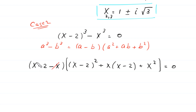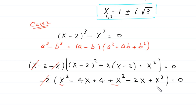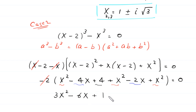Now x minus 2 minus x gives negative 2. We expand x minus 2 whole squared, which becomes x squared minus 4x plus 4, plus x squared. x times negative 2 gives negative 2x, plus x squared, is equal to 0. Dividing both sides by negative 2, x squared plus x squared plus x squared becomes 3x squared. Negative 4x minus 2x becomes negative 6x, and the remaining constant gives plus 4, is equal to 0.